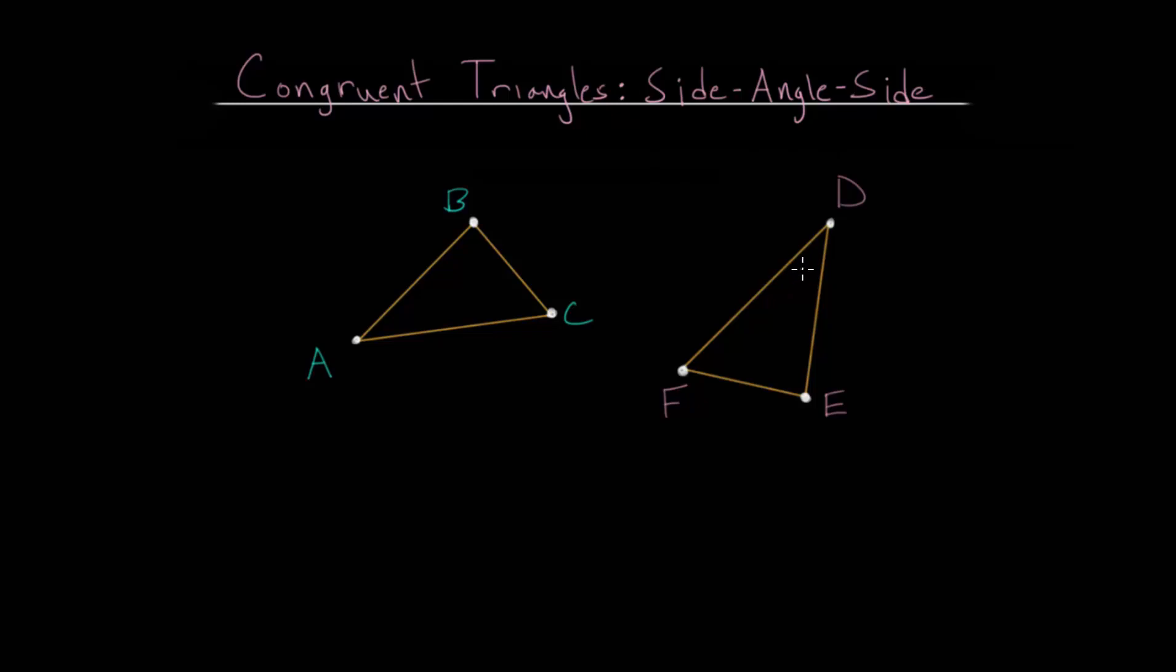This rule essentially states that if you have two triangles where they share one set of equal sides—we can say AB and DE are equal—another angle that is equal between the two triangles, and a second side that's equal on the other side of the angle, let's say BC and FE...